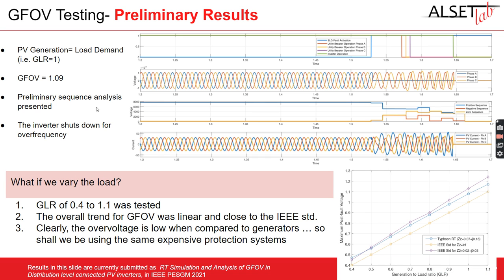What if we vary the load? Instead of just showing a result for a GLR of 1, we are showing a generation-to-load ratio of 0.4 to 1.1. We can see that the pattern of overvoltage at unfaulted phases very closely follows the IEEE standard. This further affirms our hypothesis that the overvoltage is definitely much less than for synchronous generators, and the behavior is somewhat different.